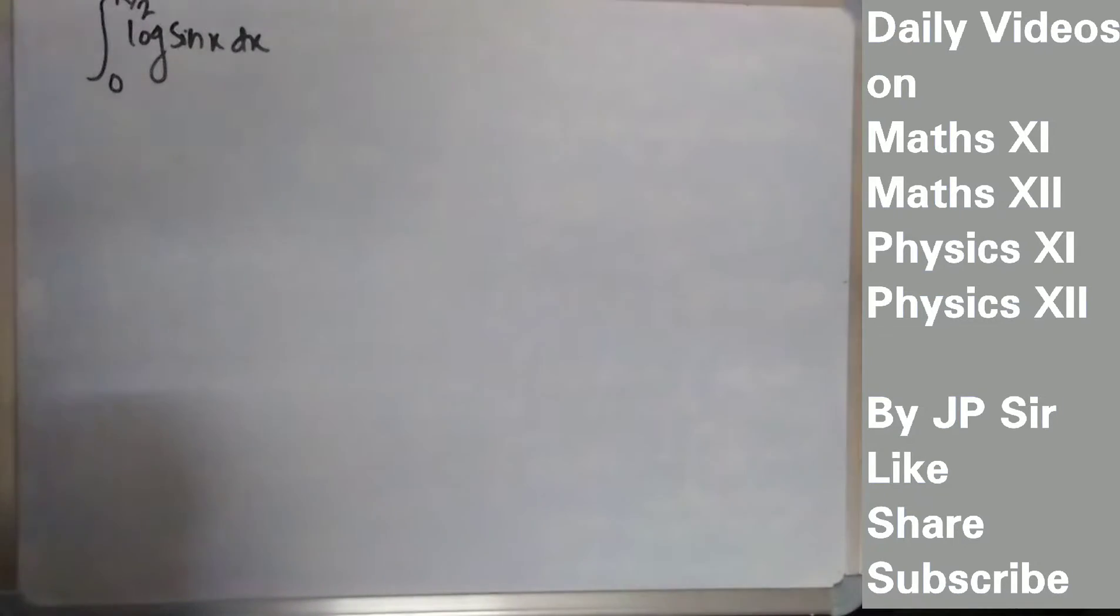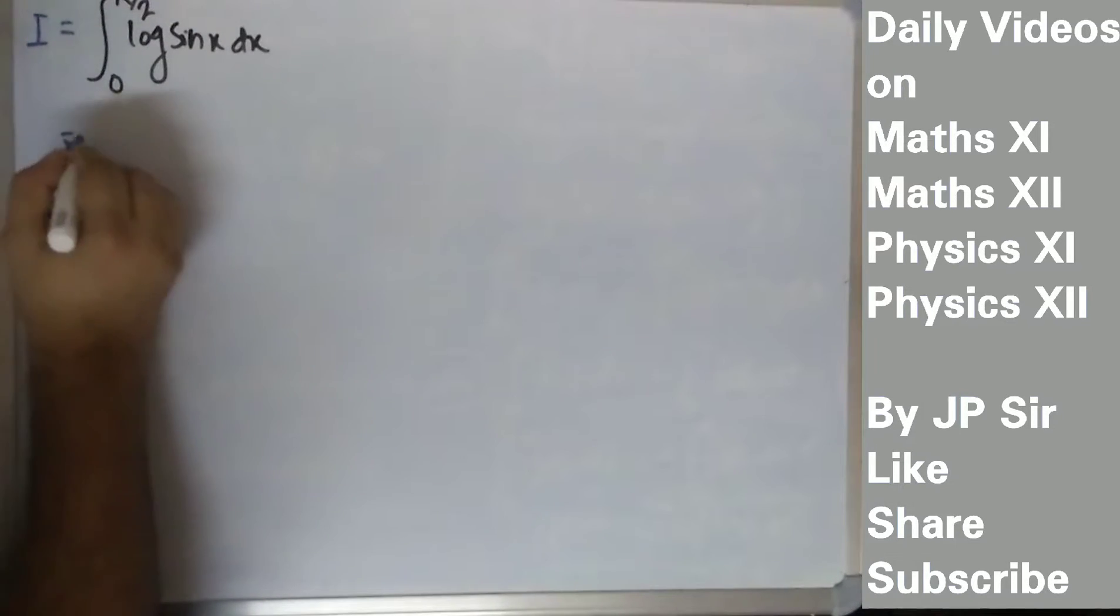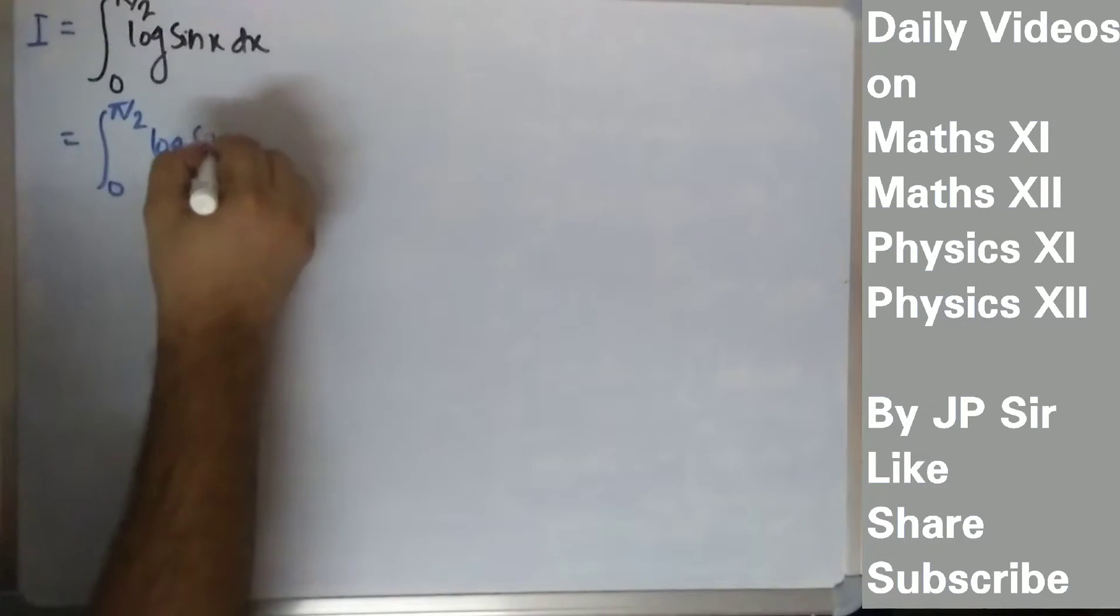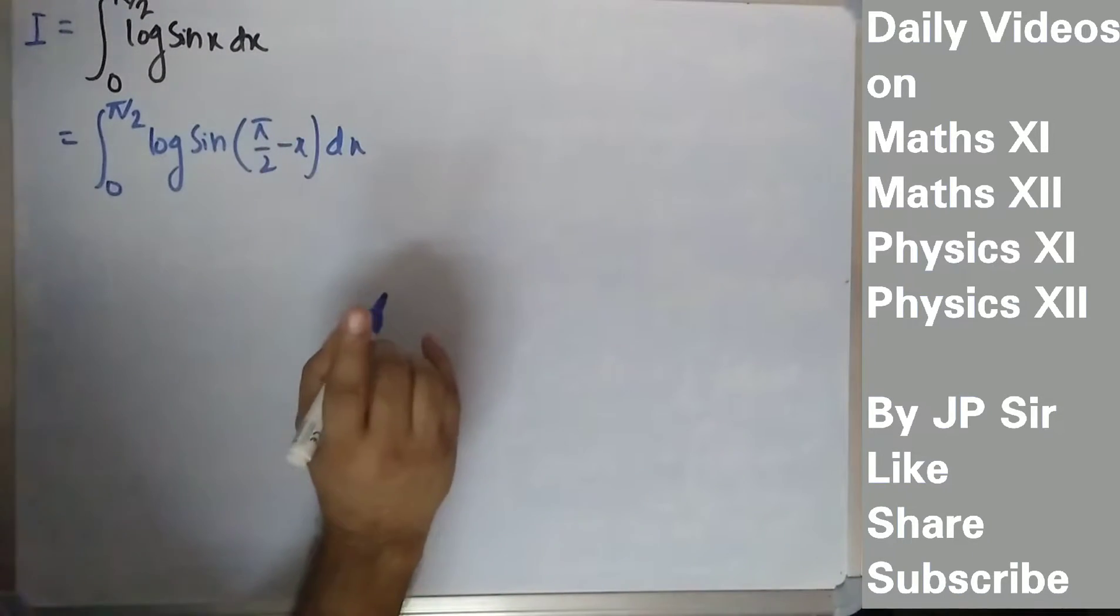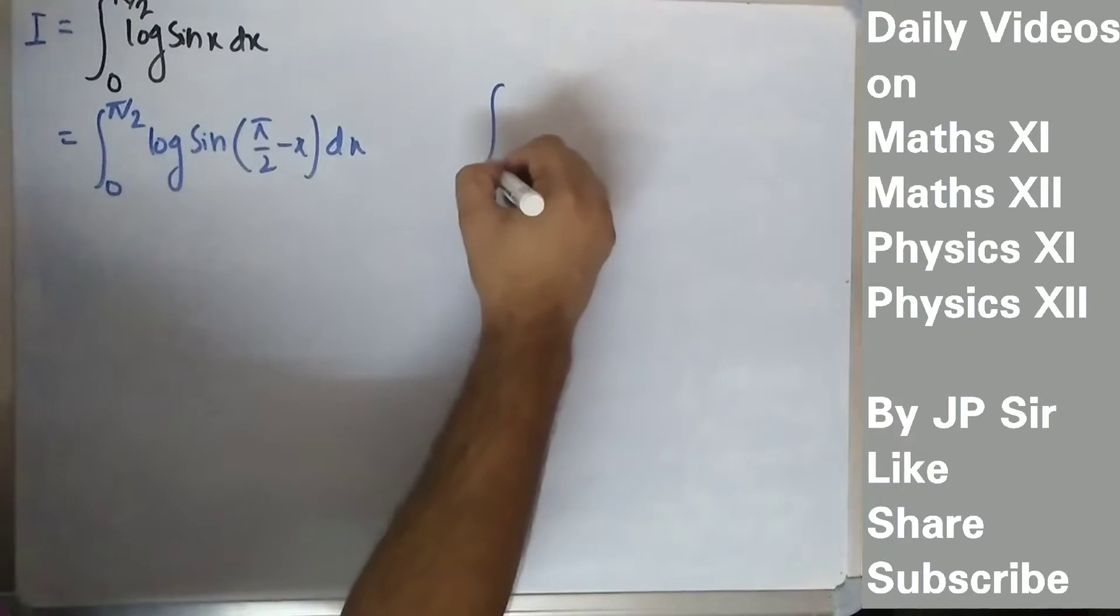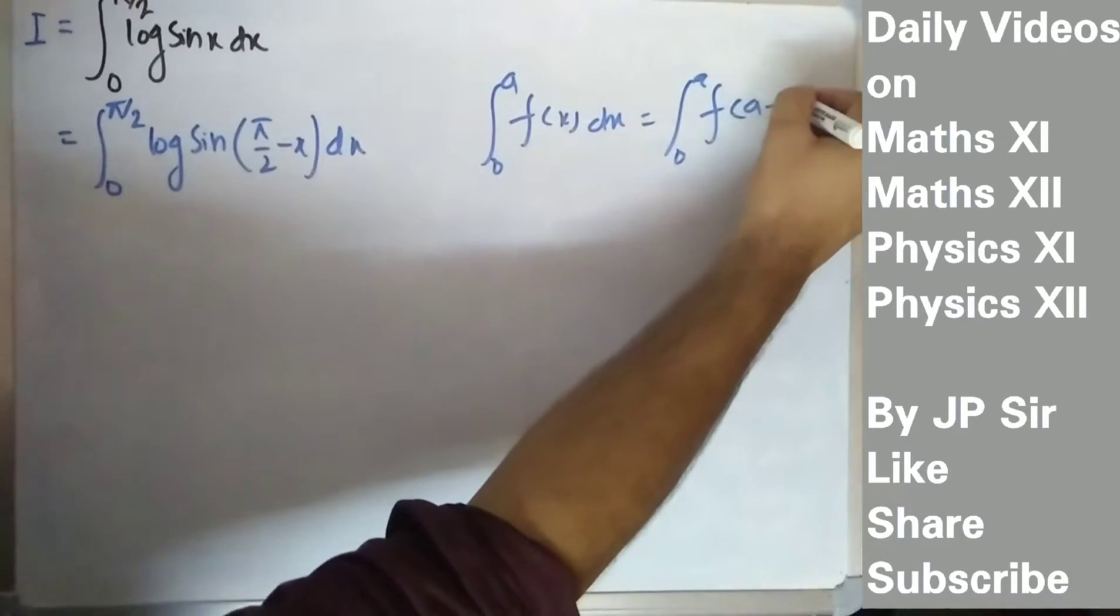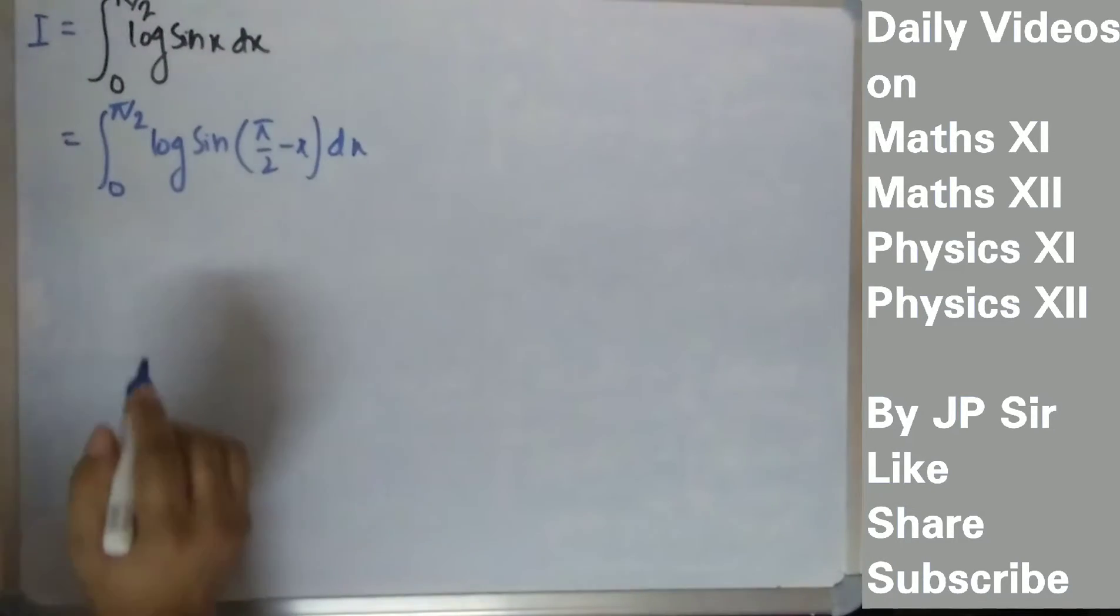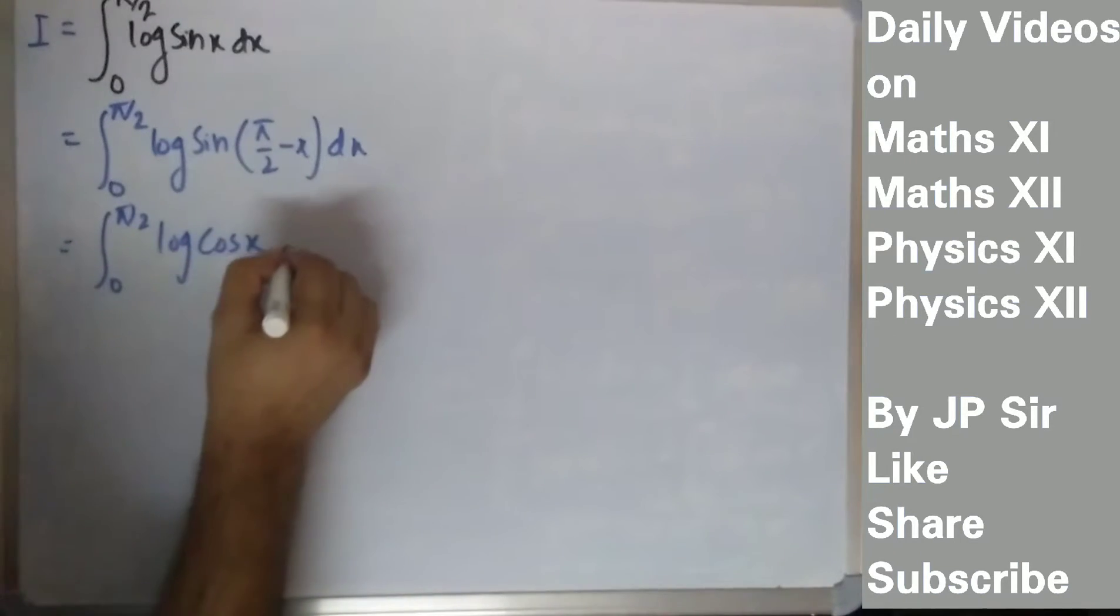Now let's start solving this question. First, take I as this integral. Now we will apply the property: integral from 0 to pi by 2 of log sin(pi by 2 minus x)dx, which equals integral from 0 to pi by 2 of log cos x dx. This is the same thing.